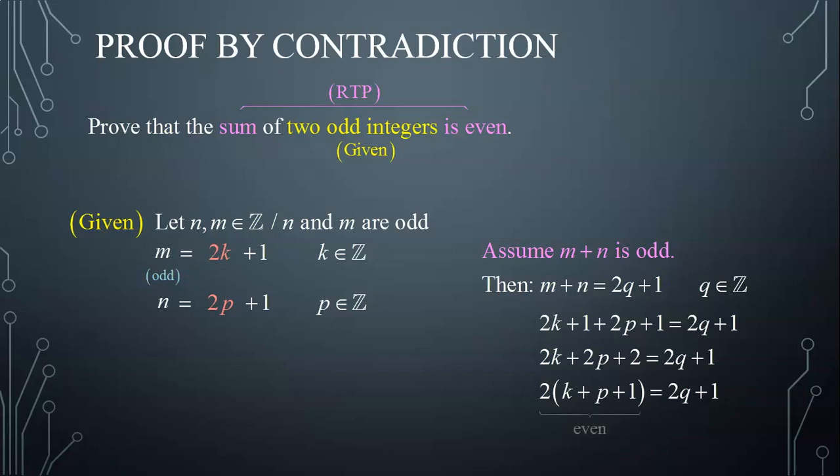Notice that the left hand side represents an even number, as it is in the form 2 times an integer, while the right hand side represents an odd number, as it is in the form 2 times an integer plus 1. This is a contradiction, as an even number cannot equal an odd number.